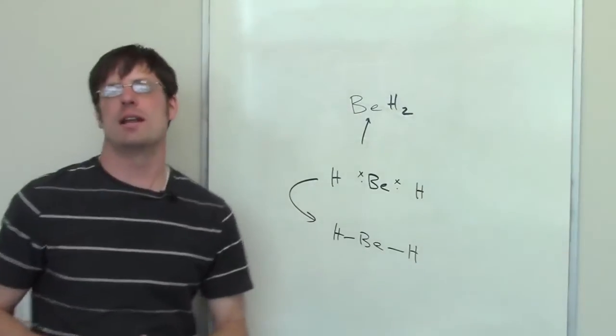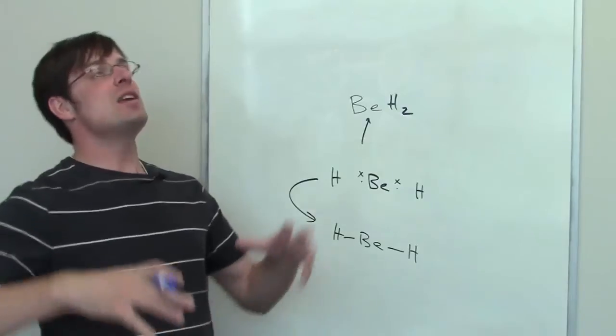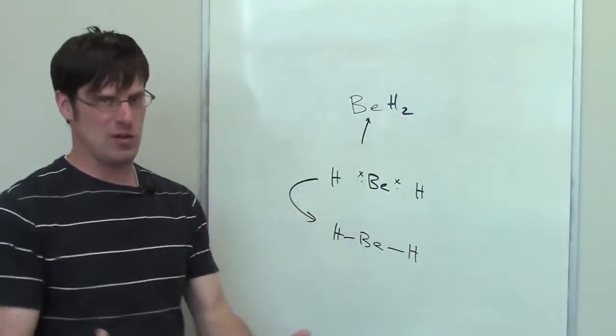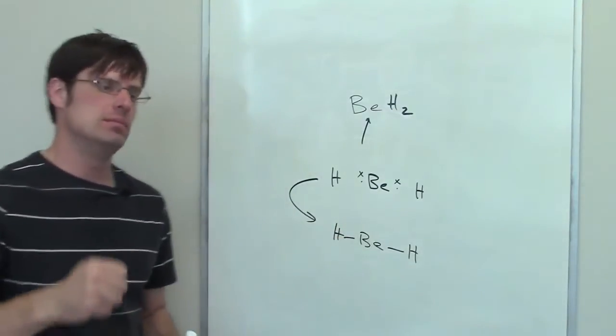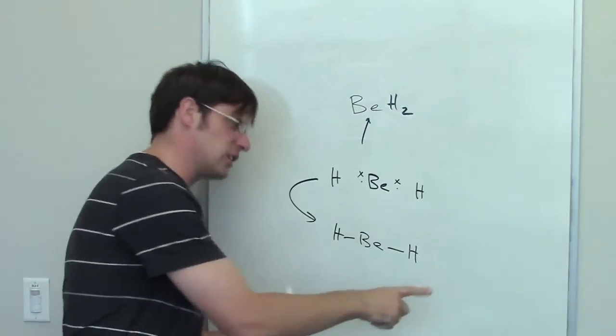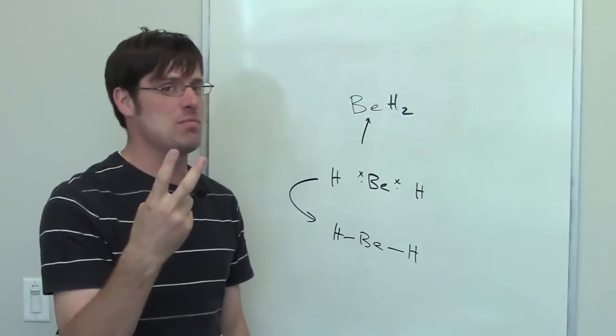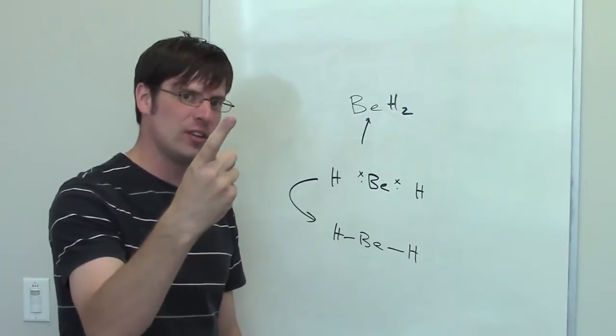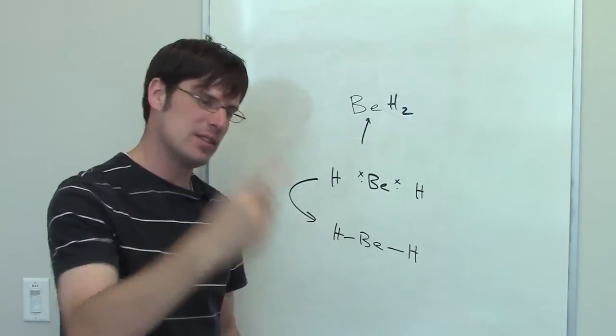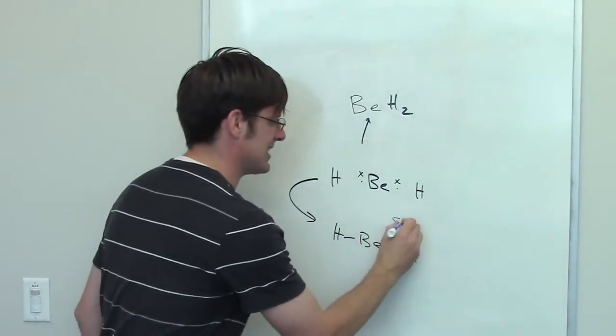Beryllium dihydride. What is the hybridization around that beryllium? I use the same approach that I have with all of my other atoms. How many things are attached to that beryllium? I've got a hydrogen to the left, I've got a hydrogen to the right, I don't have any lone pairs. So it's two. So what is the hybridization? It's S, there's only one left, P1. In other words, it's sp.